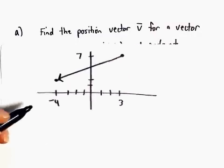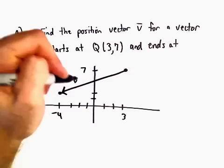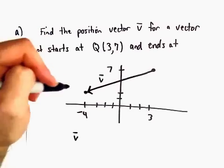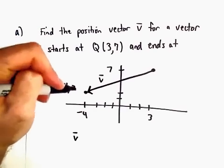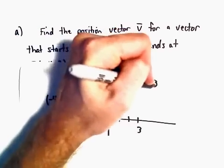To find this position vector, all we have to do is—okay, so I'm going to list the coordinates again. This is negative 4, 2. This was 3, 7.